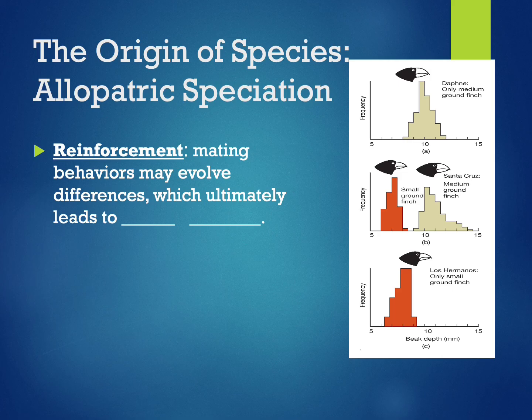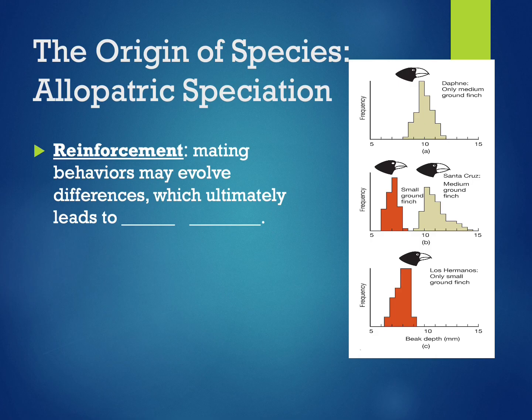Courtship behaviors or mating songs may evolve differences, ultimately leading to reproductive isolation. This is known as reinforcement. Though this example was hypothetical, there is evidence that it has actually occurred. The illustration shown demonstrates how character displacement on the island of Santa Cruz has resulted in morphological differences between two species — the medium and the small ground finch. Beak depth is most different between these species on Santa Cruz, where there is competition for food and resources.